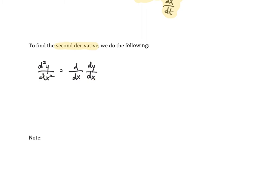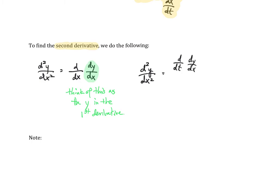So what we're going to do is we are going to take dy/dx and think of this as the y in the first derivative formula. So when we go to write the formula for the second derivative, d squared y over dx squared, you're going to differentiate the y part — which is dy/dx — with respect to t first. And then the denominator is still dx/dt. So this is how we calculate the second derivative, and I'm going to highlight this formula.